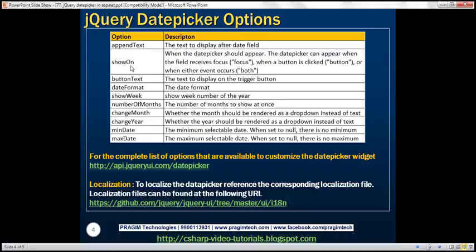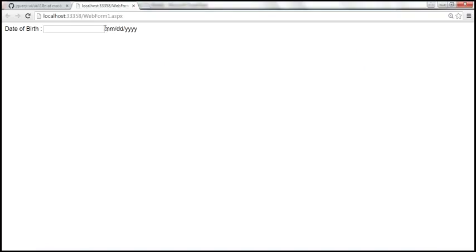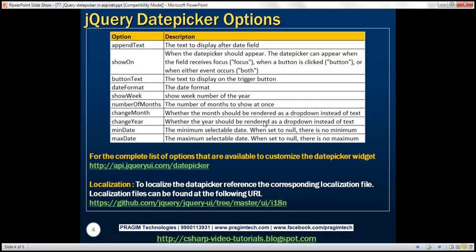Let's look at the showOn option. This option dictates when the date picker should appear. By default, the date picker appears when the text box receives focus. On many web applications, next to the date field there will be a small calendar icon, and when you click on that icon the calendar pops up. If you want that button to be displayed next to the text box, set showOn to 'button'. If you want both — calendar on focus and on button click — set this option to 'both'.